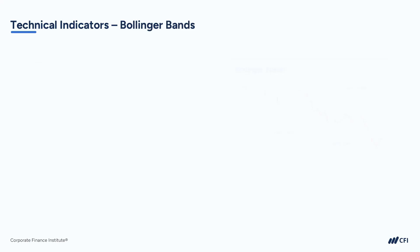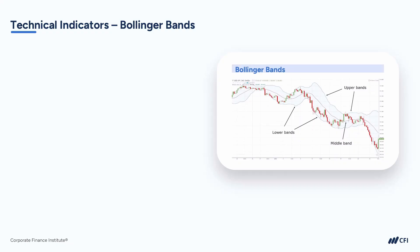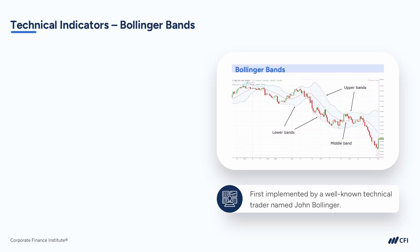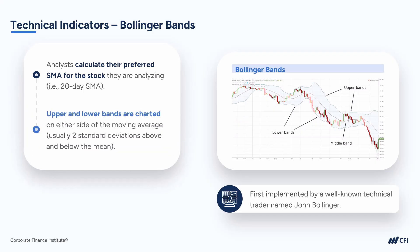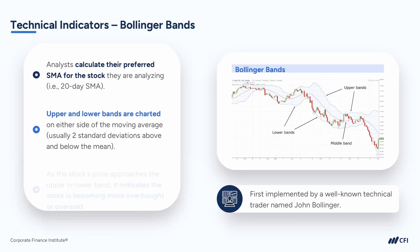The final category of technical indicator we're going to cover today are Bollinger Bands. Bollinger Bands are a very commonly used indicator first implemented by a well-known technical trader named John Bollinger. Analysts first calculate their preferred simple moving average for the stock — most commonly the 20-day SMA, though any period can be used. Next, an upper and lower band are charted on either side of the moving average, usually placed two standard deviations above and below the mean. From statistics, we know that 95% of the stock's trading activity will take place within those bands when using two standard deviations.